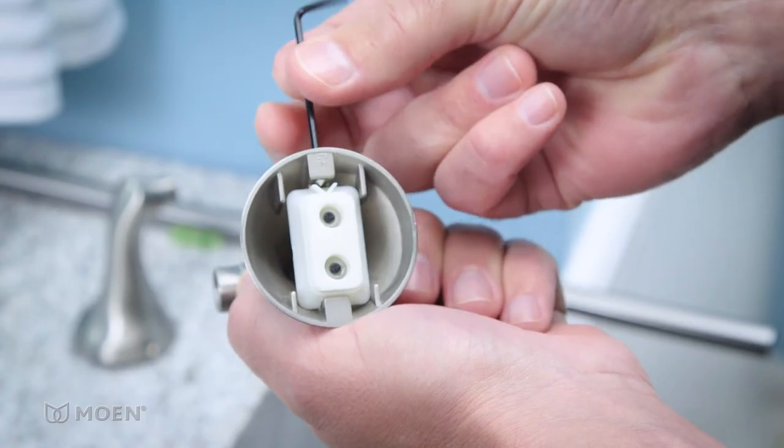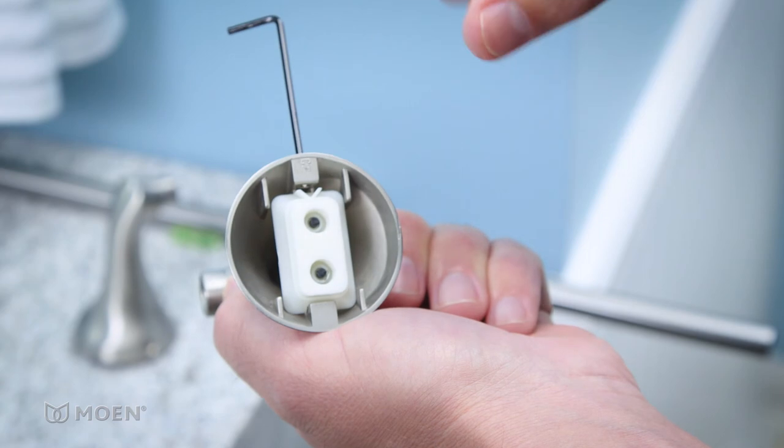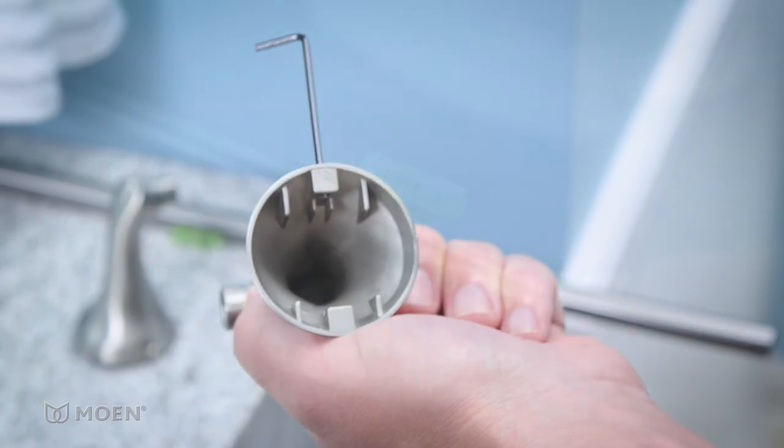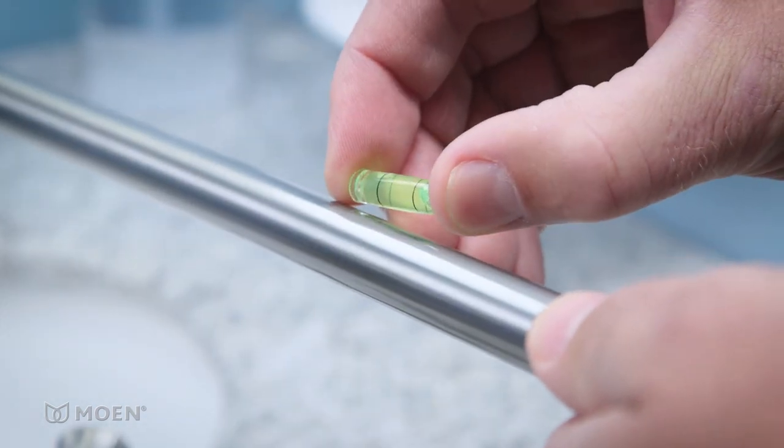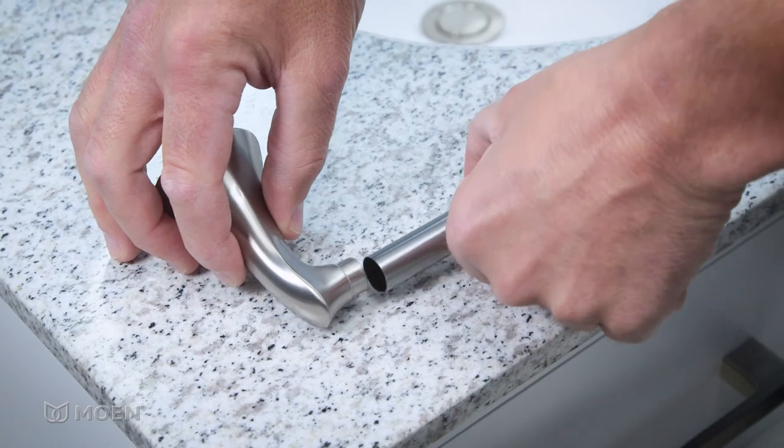Using the included hex wrench, loosen the set screws on each post and remove the ink stamp. Remove the level. Reassemble the towel bar.